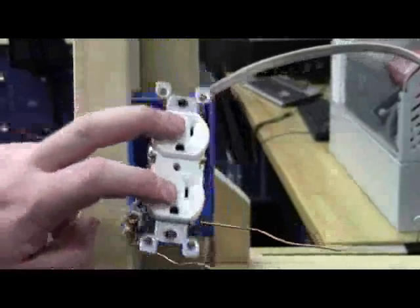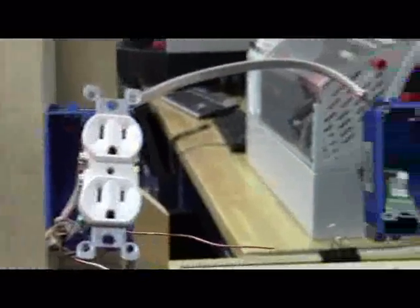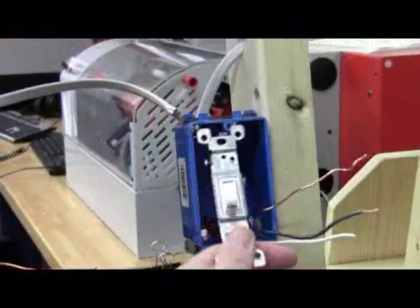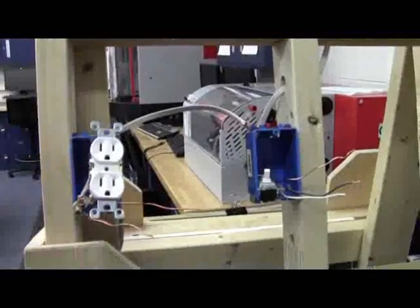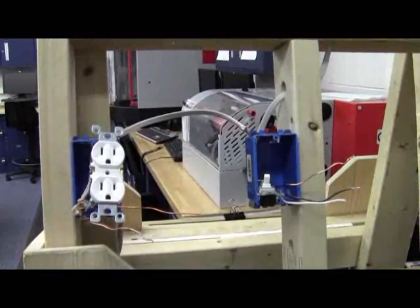So again, just to recap, you're going to have the power coming in here. This will be a hot outlet. Then you're going to have Romex powering this switch, which will, of course, control your light. And that is how you add an outlet to your circuit.